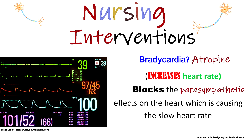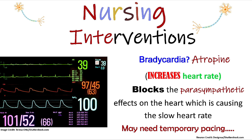For bradycardia, if the patient has a really low heart rate, atropine can be given to increase the heart rate. Atropine works by blocking the parasympathetic effects on the heart — remember, the parasympathetic system was being unopposed and keeping the heart rate slow. This medication helps combat that. But if the bradycardia is really severe, the patient may need temporary pacing.